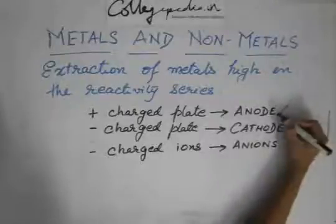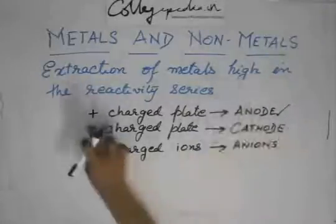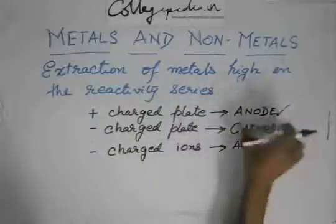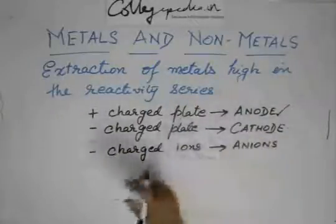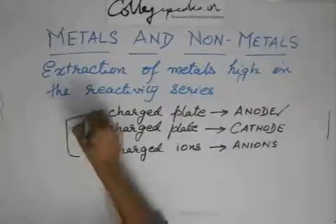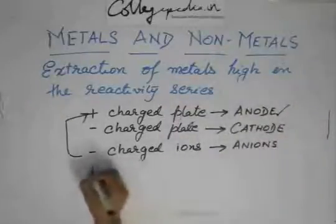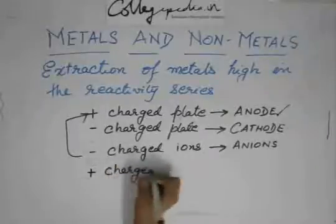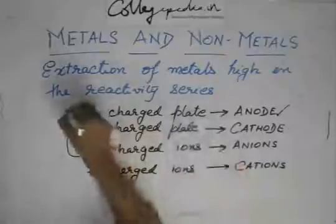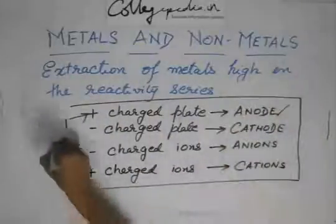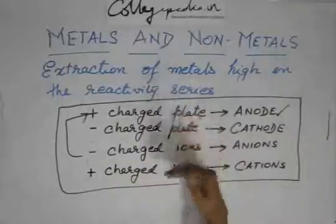No. Remember this only for anode: it starts with an A, addition also starts with an A, so anode is positive. Rest you can derive yourself. If the positively charged plate is the anode, then the negatively charged plate is the cathode. The negatively charged ions move towards the positively charged plate, so they are called anions. And so the positively charged ions are called cations. Just remember: positively charged plate = anode, and derive the rest from that.